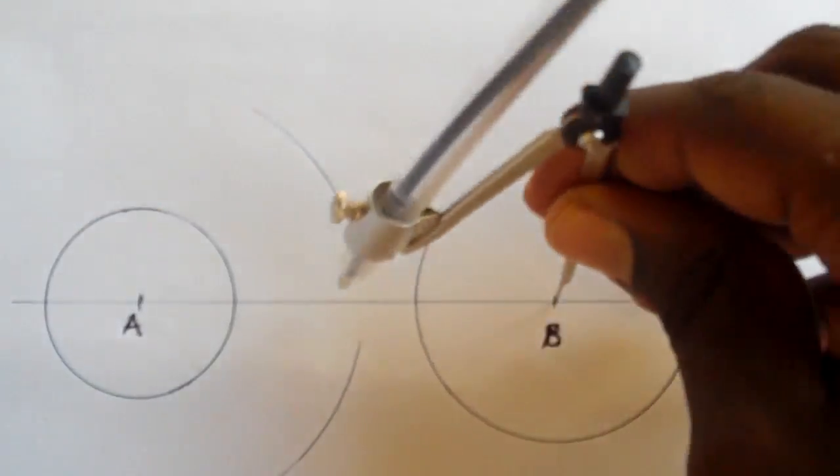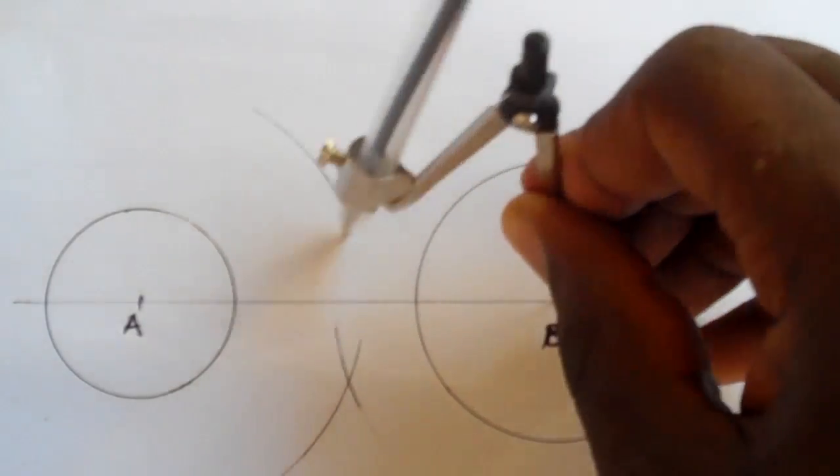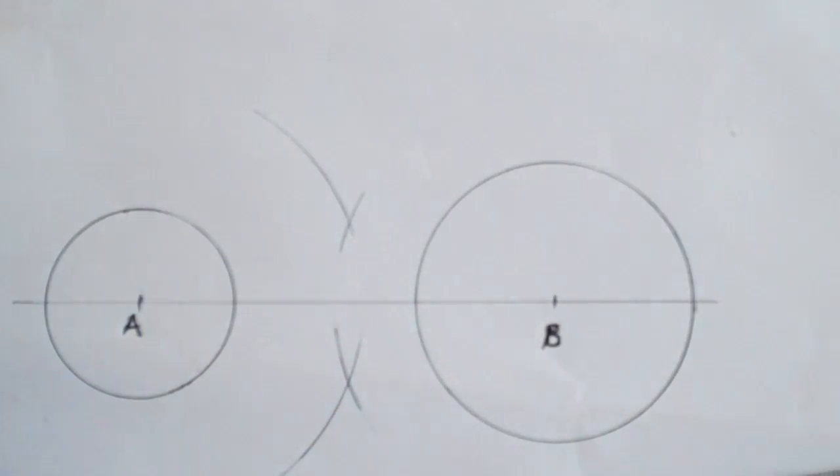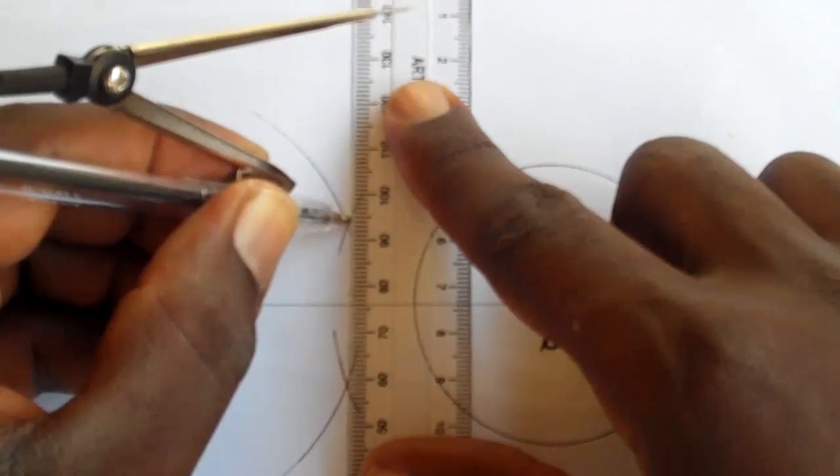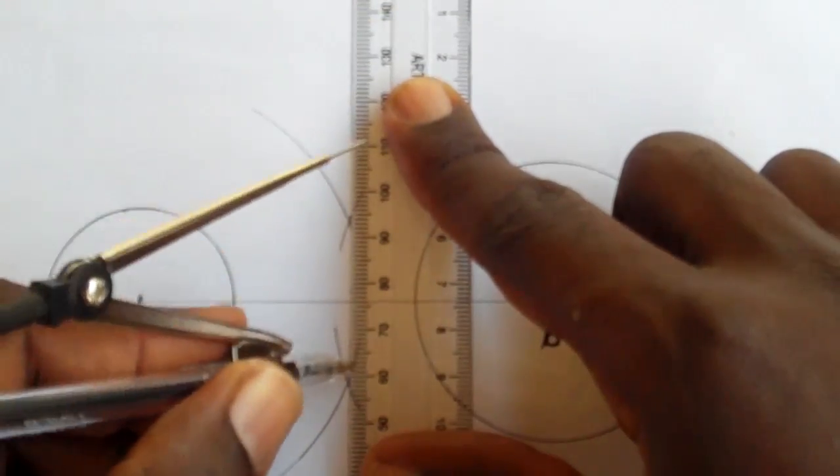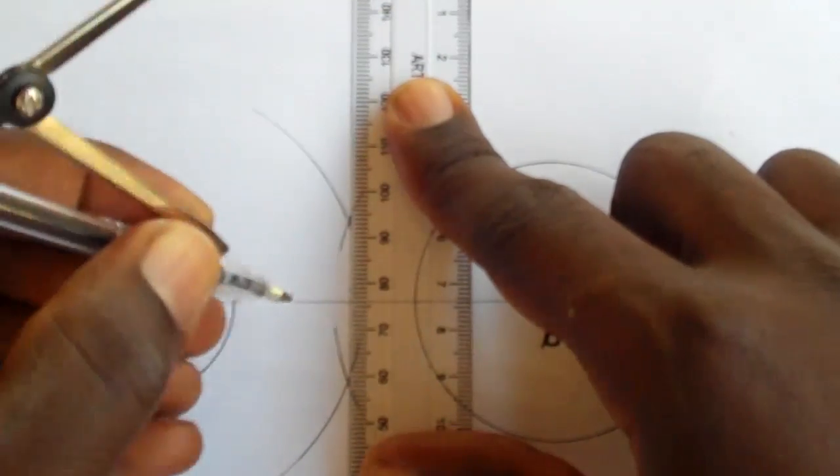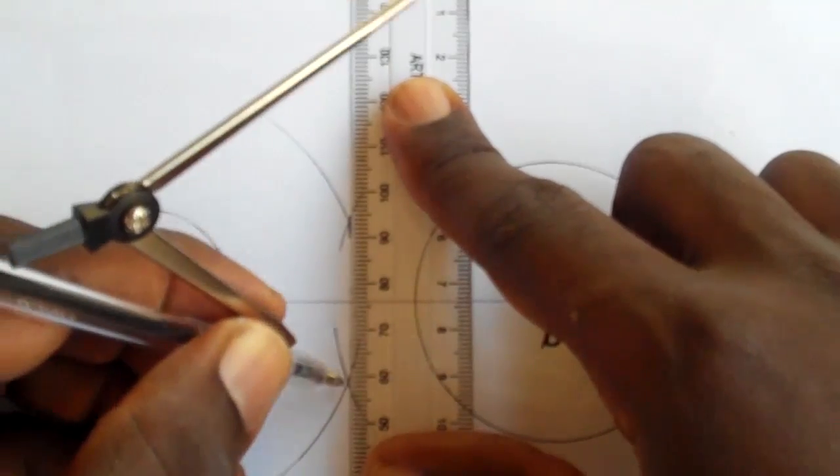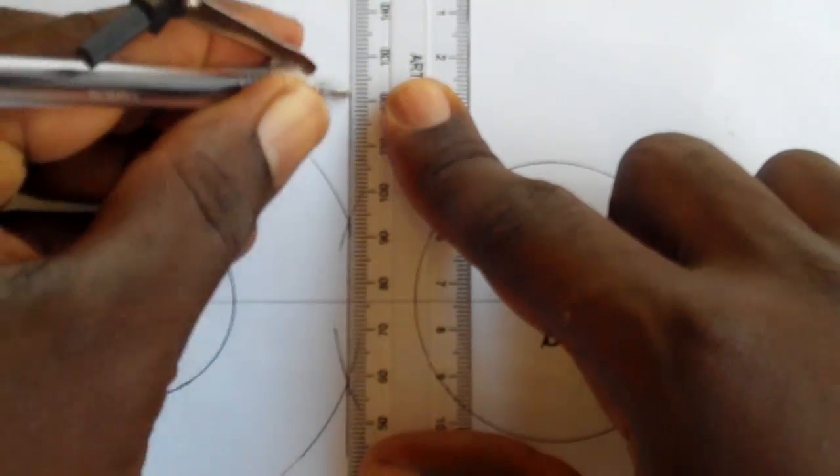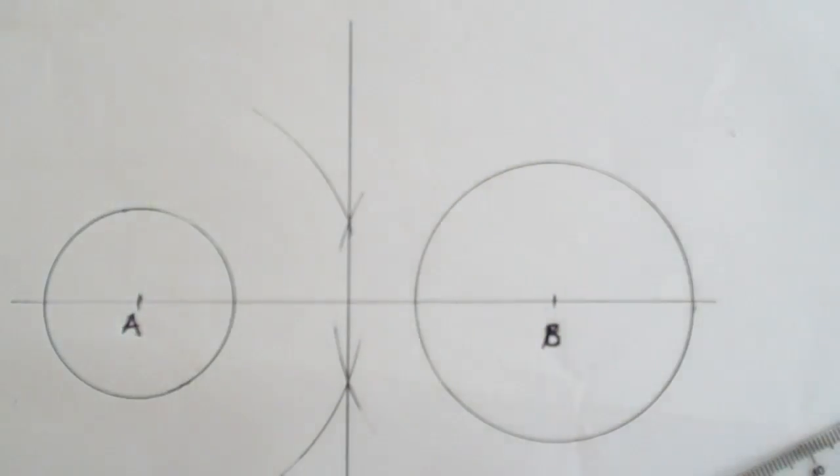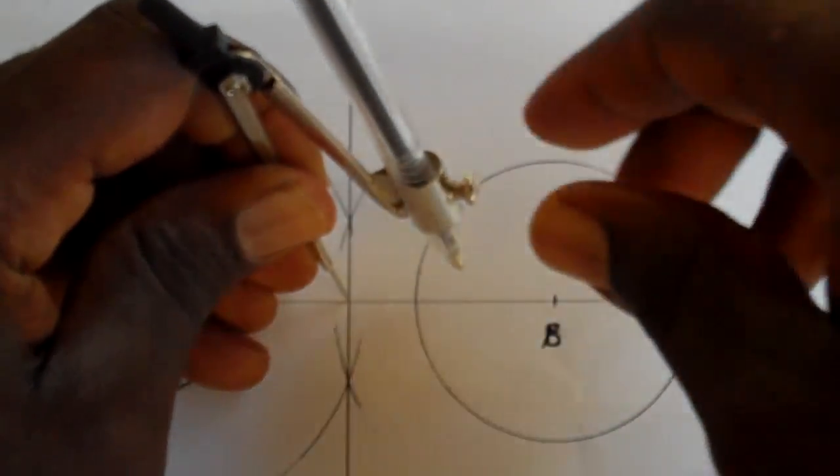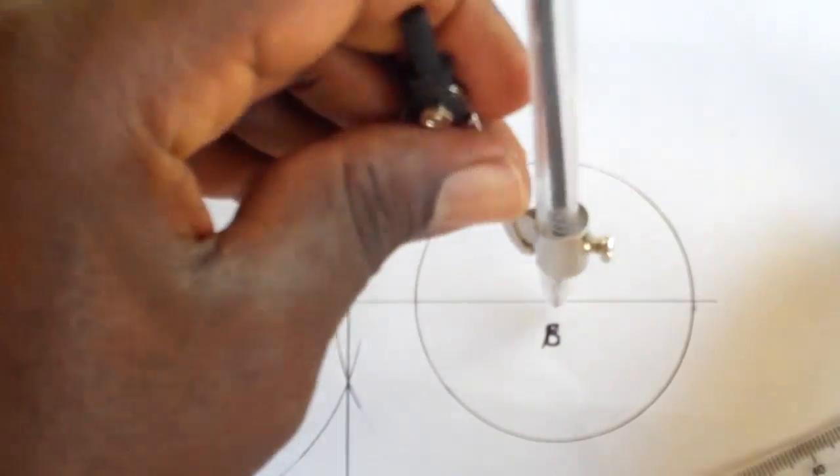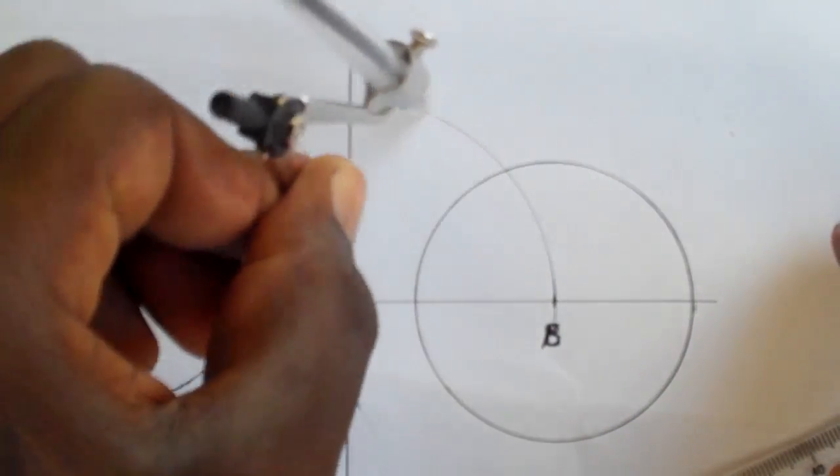You start by bisecting AB. Then draw the arc that joins A to B.